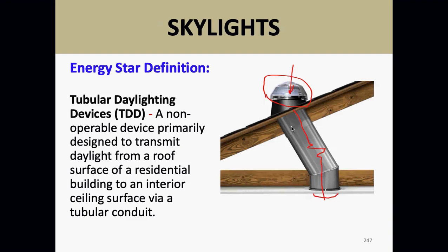The tubes can go up to 25 feet, but they can't have sharp angles — you can't come down from the roof and make a 90-degree turn. They have to have gradual bends, because light doesn't do well coming around sharp angles. Does anyone have any questions on skylights and windows before I move on?